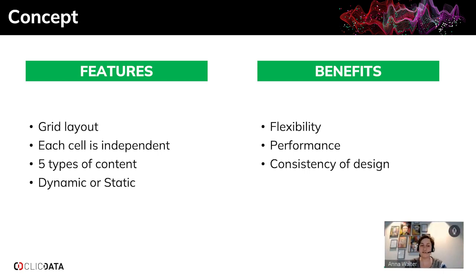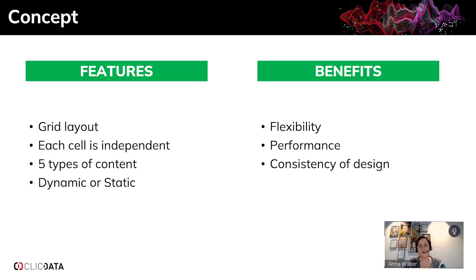You can also make correlations between cells and have references from one cell to another. We currently have five types of content that can be used in each cell, and that content can be dynamic or static. The widget is very flexible because of that cell-by-cell and row-by-row setup, and it's also very performant. Another big benefit is that you can have a very consistent design across everything you show in the widget.